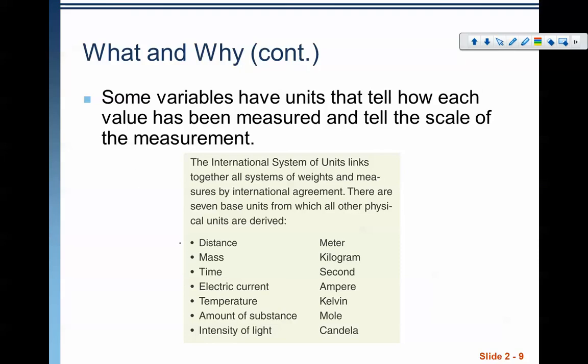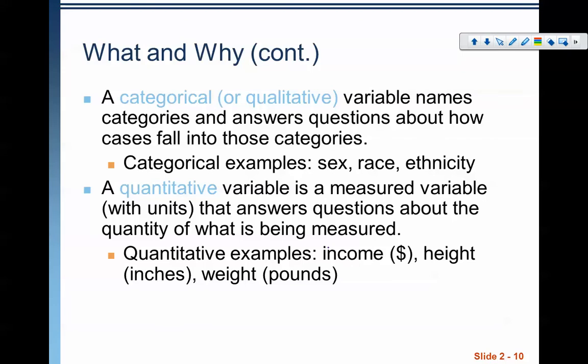To understand these variables, you've got to think about what you want to know. Some variables have units that tell us how each value has been measured and the scale of that measurement—like distance in meters, mass in kilograms, etc. There are two types of variables: a categorical variable, or sometimes called a qualitative variable. It shows the names and categories, and answers questions about how cases fall into those categories. For example, a category might be your gender or sex, your race, your ethnicity. Think of it like there are buckets.